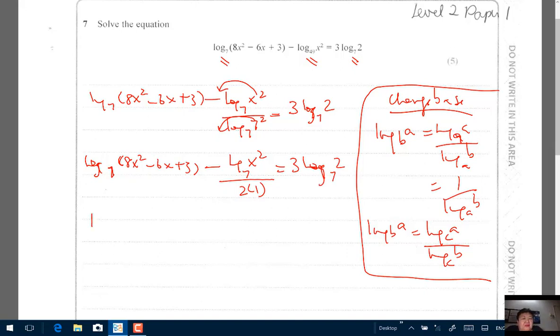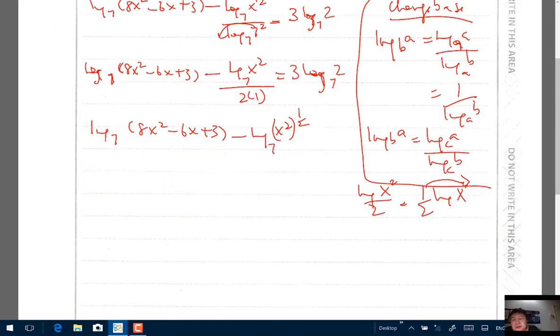So now I have log of 8x squared minus 6x plus 3 minus divided by 2 means half. It's actually half log x squared, which means log x squared. The half you can move to the front will be power half. Remember this log x over 2 means half log x. This half can go to the front. 3 times 1. But because you have a square here, it becomes log x squared power half becomes log x. So this power will cut each other off.